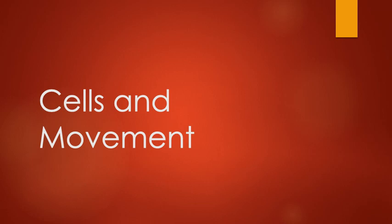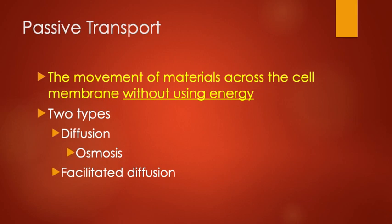Let's dive into cells and movement. The first thing we're going to talk about is passive transport. If there's something called passive transport, there must be something called active transport — and you're right, there is. But first up is passive transport. Passive transport is any way a cell has of transporting material into it or out of it without needing any energy. The cell can do this free of charge; it just happens naturally. There are two main types: diffusion and facilitated diffusion. None of these require any energy.